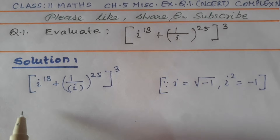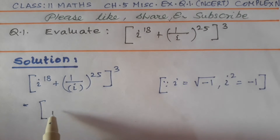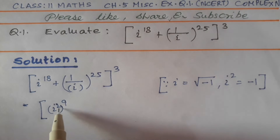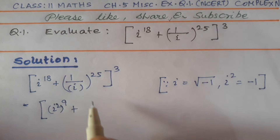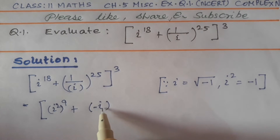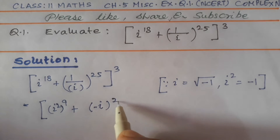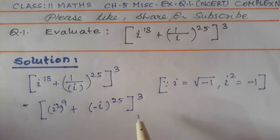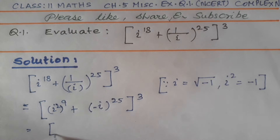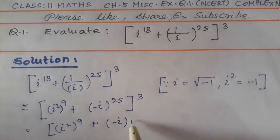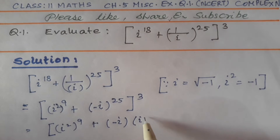Now we can write i^18 as (i²)^9, since power over power will be multiplied: 9 into 2 gives 18. And i^25 can be written using the rules of exponents as i^24 times i^1, so 1 by i^25 becomes minus iota, and these are rules of exponents we have already learnt.